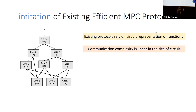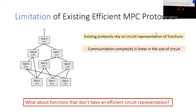While there are some protocols that have sublinear communication, those usually rely on heavy computational primitives such as FHE or homomorphic secret sharing schemes, which at least currently are pretty far from being practical. Therefore, in order to efficiently compute a function, what we need is an efficient circuit representation of the function. But what if a function doesn't have an efficient circuit representation?